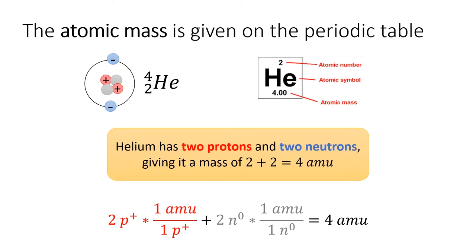For example, helium has two protons and two neutrons, which each weigh one atomic mass unit, giving it an atomic mass of 4 amu.